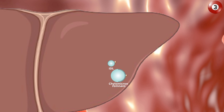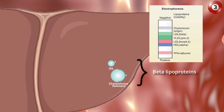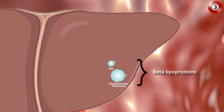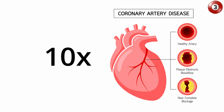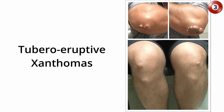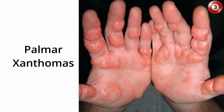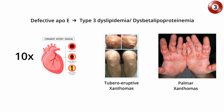A major function of ApoE is to mediate the binding of lipoproteins to cell surface receptors and internalize them. Beta lipoproteins — the remnants of chylomicrons and VLDL — accumulate when there is a defect in ApoE. This accumulation leads to premature atherosclerosis with a 10-fold increased risk of premature coronary artery disease and the development of tubero-eruptive and palmar xanthomas. This condition is called type 3 dyslipidemia, or dysbetalipoproteinemia.